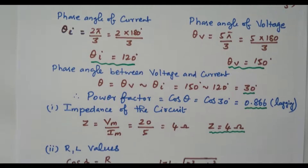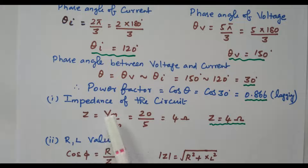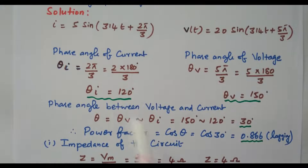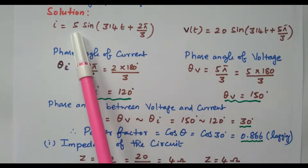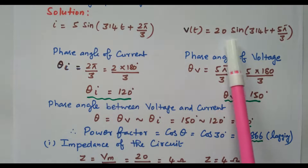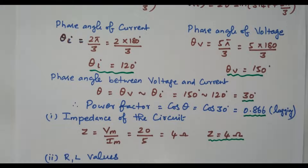Now the next parameter: impedance. Impedance of the circuit can be calculated as Z = Vm / Im. From the equations, Vm = 20 and Im = 5, so Z = 20/5 = 4 ohms. Vm and Im are the maximum values of voltage and current available from the equations. So we calculated Z = 4 ohms.